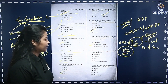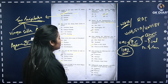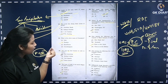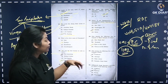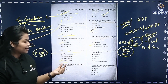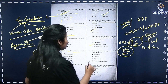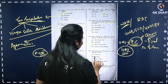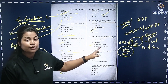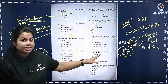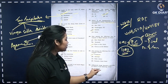Who among the following was the son of Emperor Babur? The answer is Humayun — option A is the correct answer. Gulbadan Begum wrote Humayun Nama.